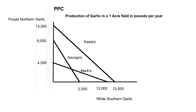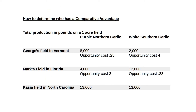When you're given a graph like this, you can make an intuitive judgment of which person has the lowest opportunity cost for which product. But better is to go to a table. The rule with the table is: if you're looking at it from George's field in Vermont — purple northern garlic — what is the opportunity cost? Other goes over. So you take the 2,000 and put it over the 8,000 and you get 0.25.